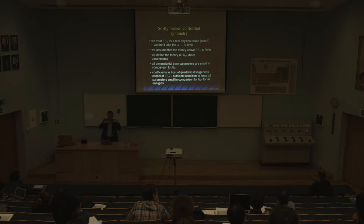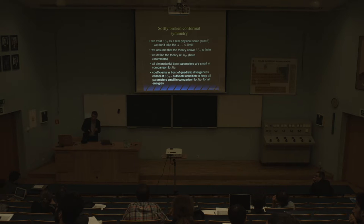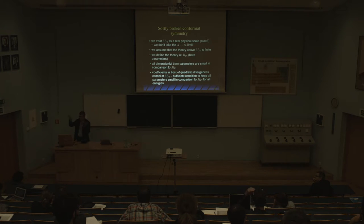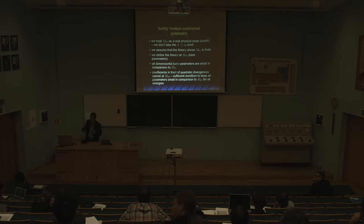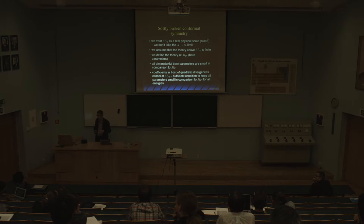The equations involve combinations like lambda_1 squared minus 3 lambda_2 squared, and so on. If I run the coefficients and see they are negative somewhere and positive somewhere, they have to cross zero. I define my bare parameters at the point where this is exactly zero — that is my definition of bare parameters and where I define my theory. It is enough that having bare parameters at this particular point means I do not have the hierarchy problem.